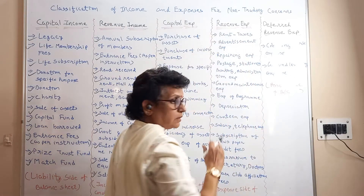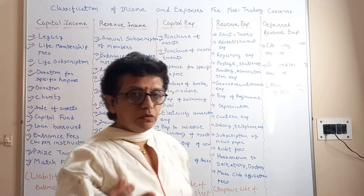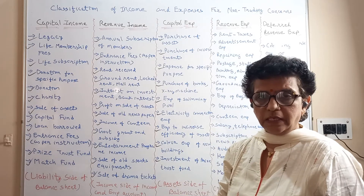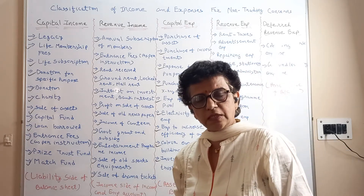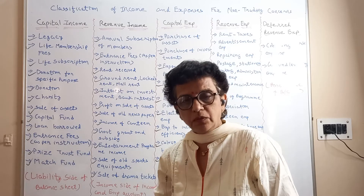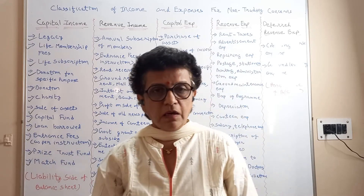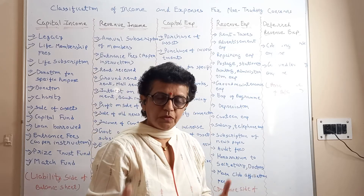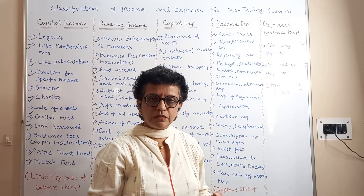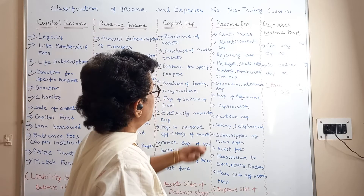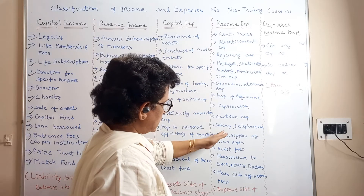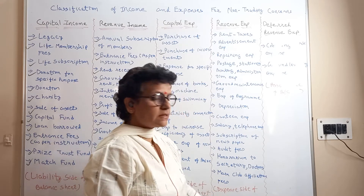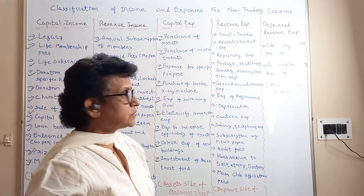Now, revenue expense. Routine — just as we have routine income, we also need to incur routine expenses, otherwise how will the institution function? We need to pay rent regularly, pay salaries, do maintenance expenses to keep the sports club running, and spend on small day-to-day things. All these revenue expenses are going to be shown on the expense side of the income and expenditure account.